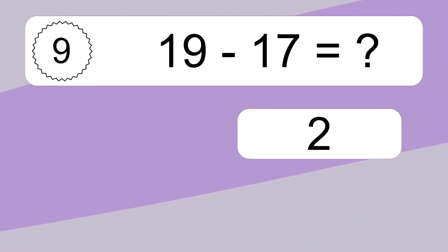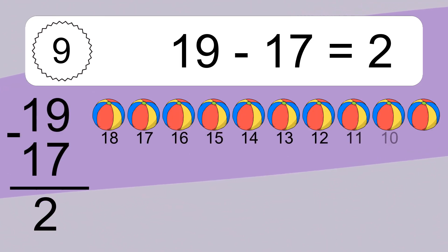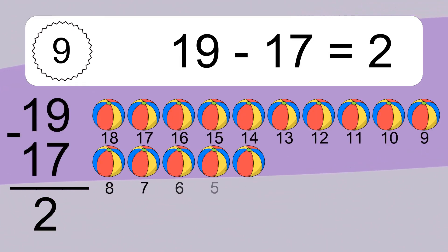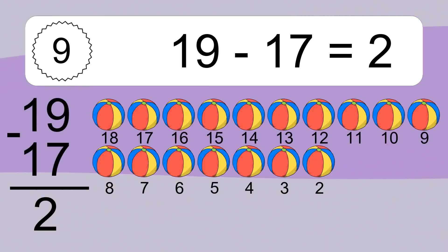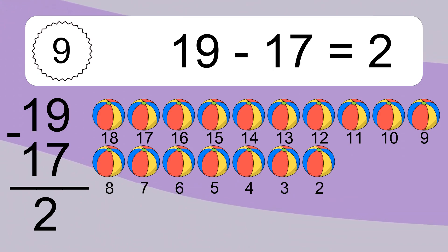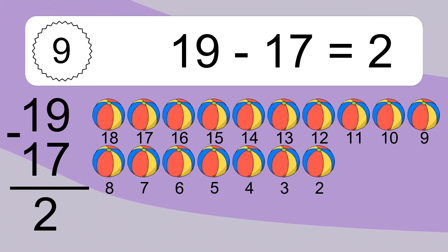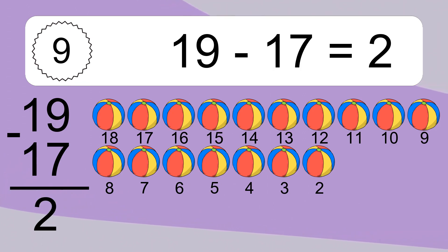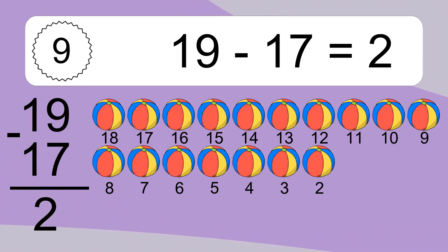19 minus 17 equals what? 19 minus 7 equals 2. Let's count it: 18, 17, 16, 15, 14, 13, 12, 11, 10, 9, 8, 7, 6, 5, 4, 3, 2.